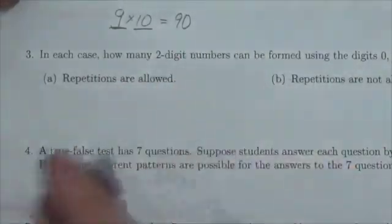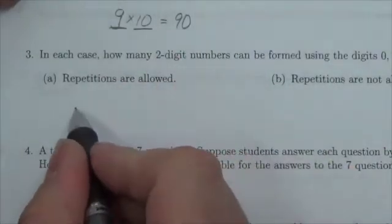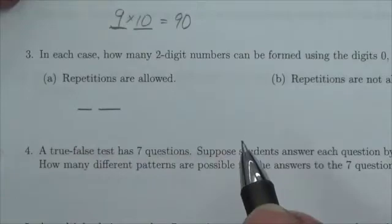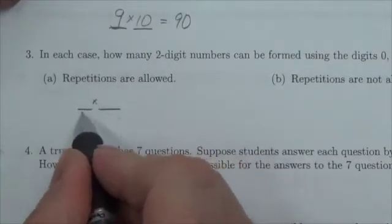Okay, so the first situation here says that repetitions are allowed. So I've got two digits, a two-digit number that I've got to create here, so I've got two subtasks.